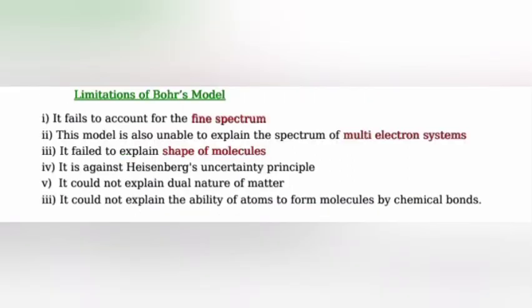Limitations of Bohr model: It fails to account for the fine spectrum. This model is also unable to explain the spectrum of multi-electron systems. It failed to explain the shape of molecules. It is against Heisenberg uncertainty principle. It could not explain dual nature of matter. It could not explain the ability of atoms to form molecules by chemical bonds.